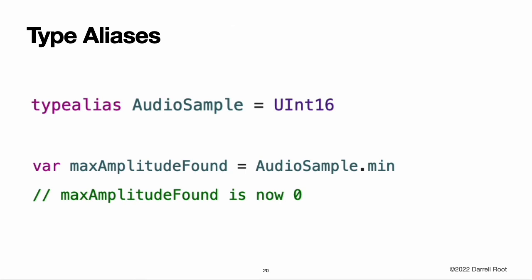Type aliases define an alternative name for an existing type. Type aliases are useful when you want to refer to an existing type by a name that is contextually more appropriate, such as when working with data of a specific size from an external source. Once you define a type alias, you can use the alias anywhere you might use the original name. Here, audio sample is defined as an alias for UInt16. Because it is an alias, the call to AudioSample.min actually calls UInt16.min, which provides an initial value of 0 for the max amplitude found variable.